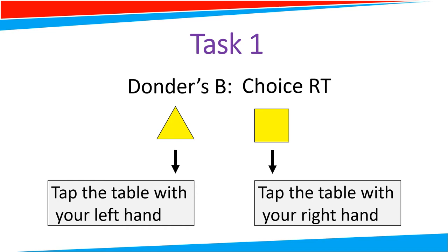What if, however, we introduce multiple stimulus response alternatives? So here in choice reaction time, we have a stimulus, which is the yellow triangle and the response of tapping the table with the left hand.